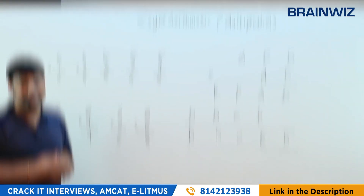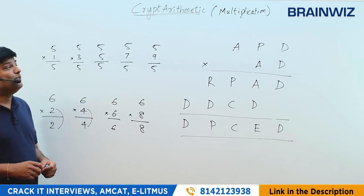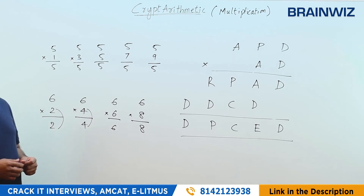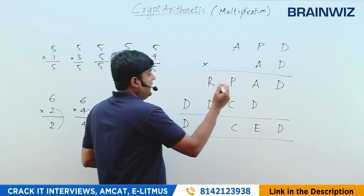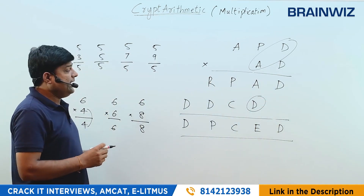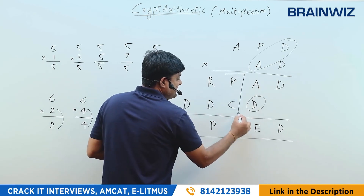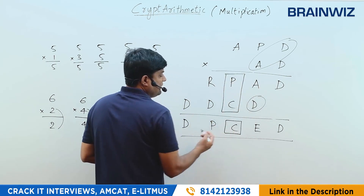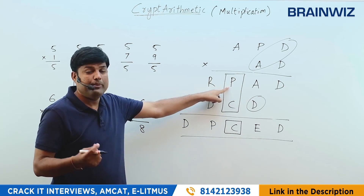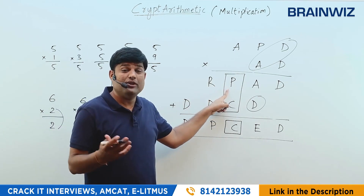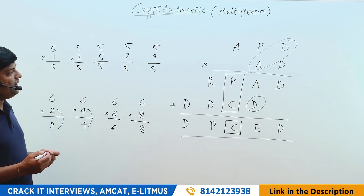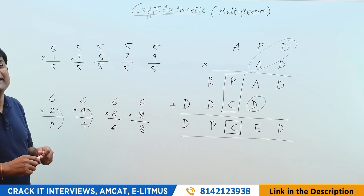Let's start solving. From the addition basics, P added with C giving C back means P has to be 0. Or, if it's not 0, it has to be 10 — meaning 9 plus a carry. So P is either 0 or 9. This is a very big hint. From the multiplication hint, A multiplied with D gives D back. These two hints together allow us to crack the whole question.